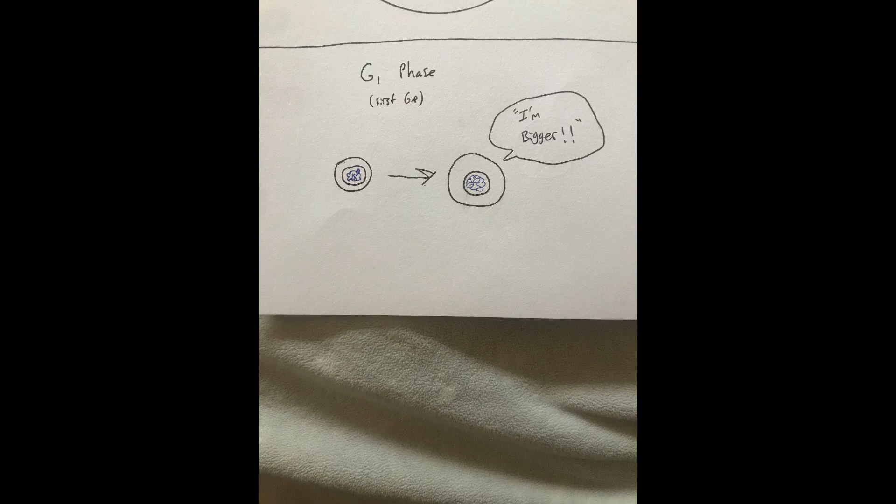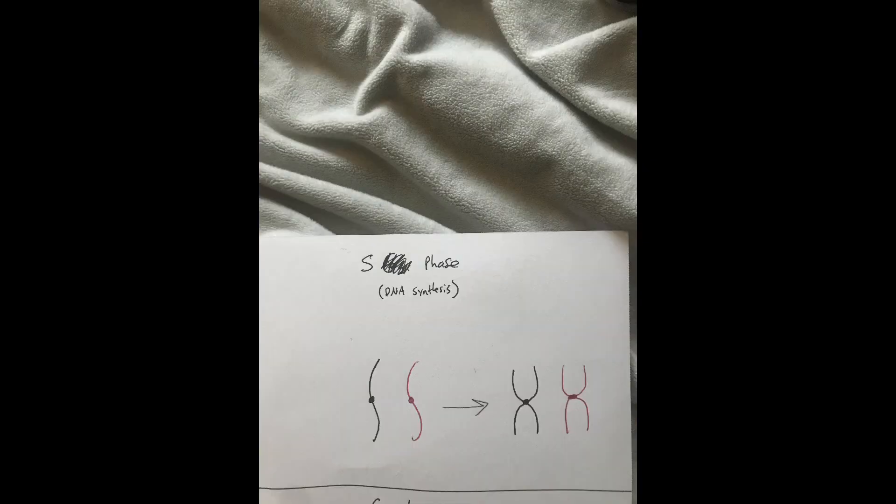They are the G1 phase, the S phase, and the G2 phase. During the G1 phase, the cell increases in mass in preparation for cell division. During the S phase, the DNA in the cell is synthesized, meaning the chromosomes are doubled.